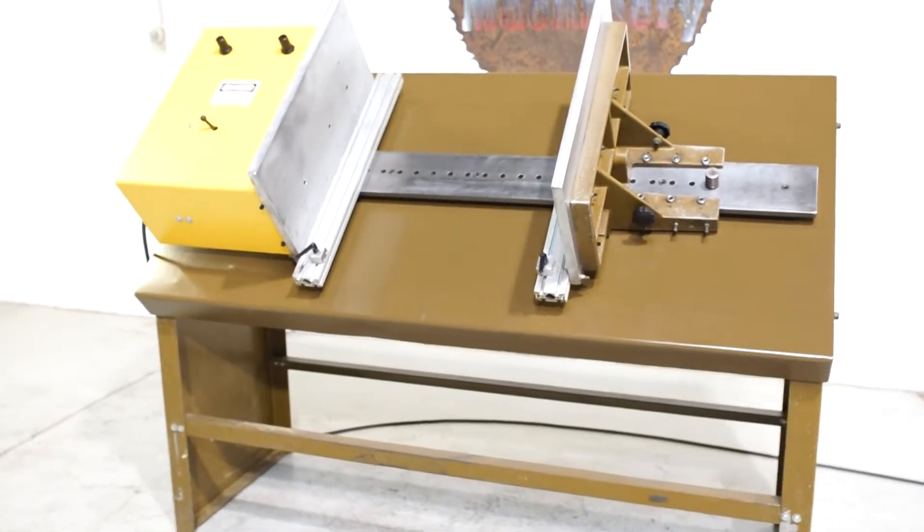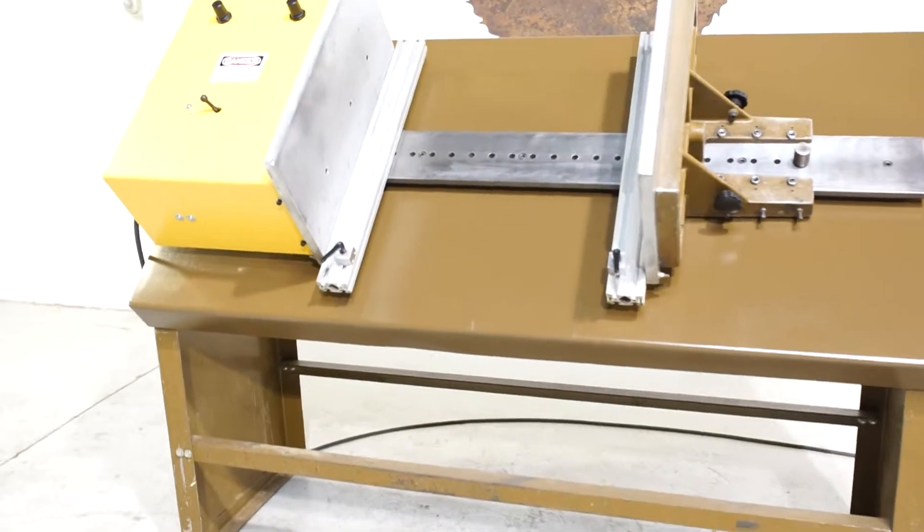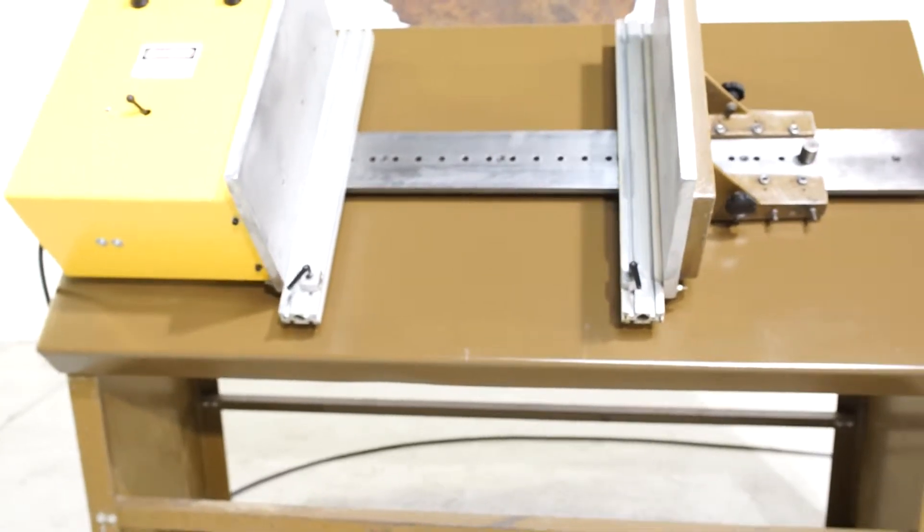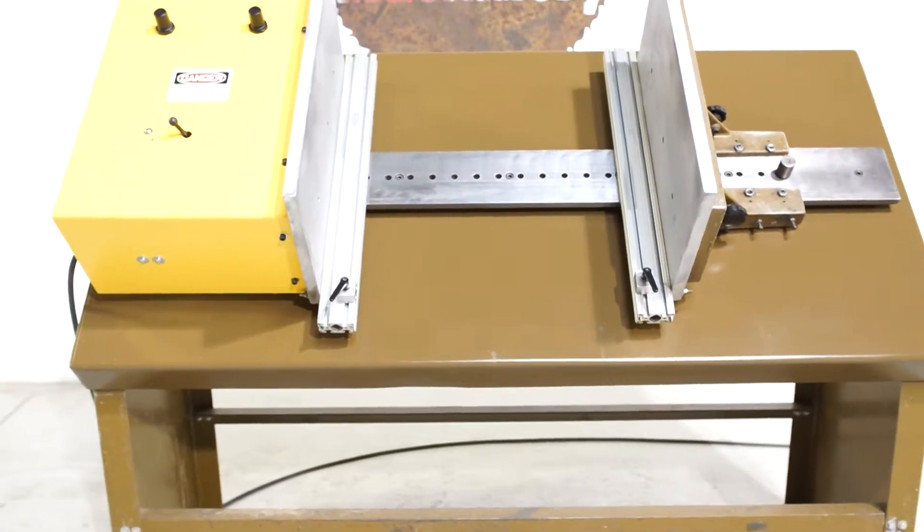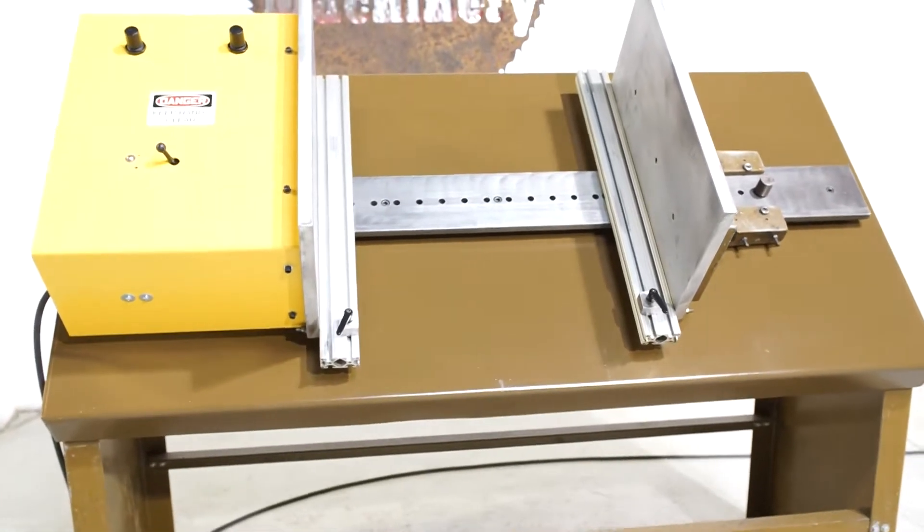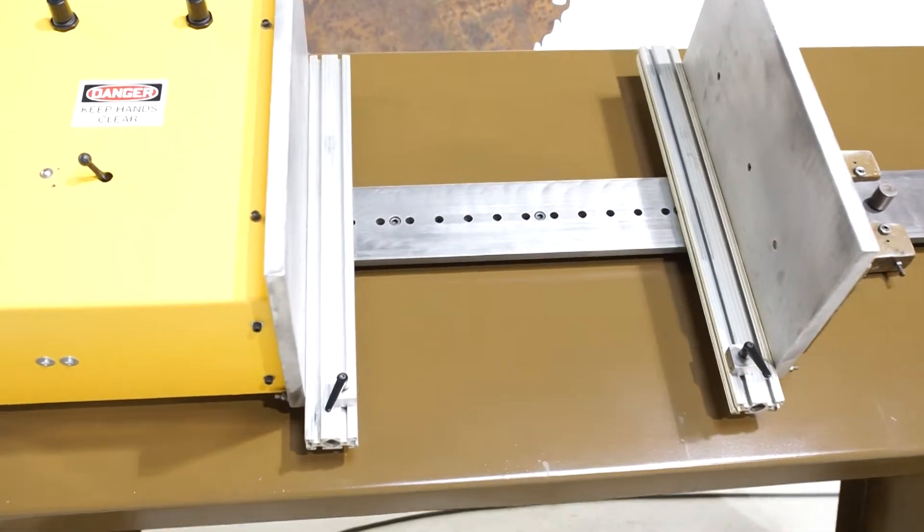This is a Ritter R875SP drawer clamp. Simple to use, fully pneumatic. It does have a 14 by 24 by 36 inch capacity.